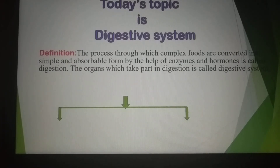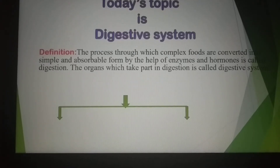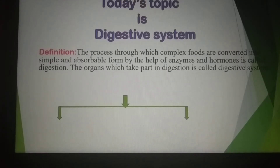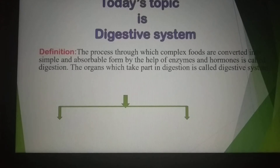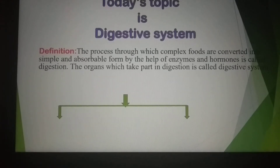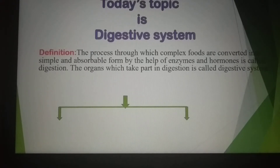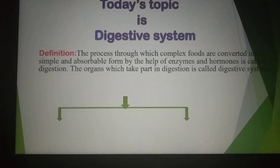Definition of Digestive System. First you have to know what is digestion. The process through which complex foods are converted into simple and absorbable form by the help of some enzymes and hormones is called digestion. The organs which take part in digestion are called the digestive system.